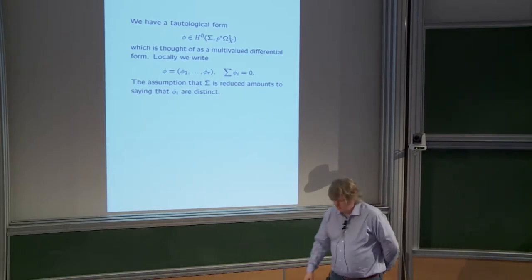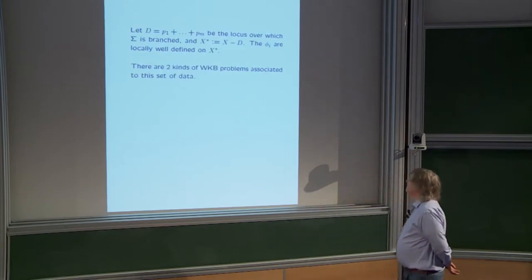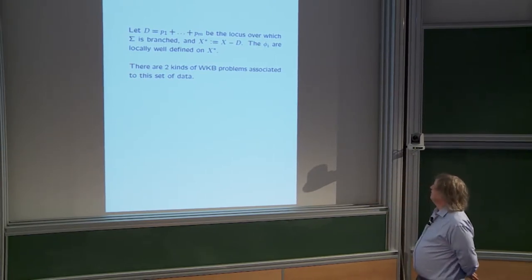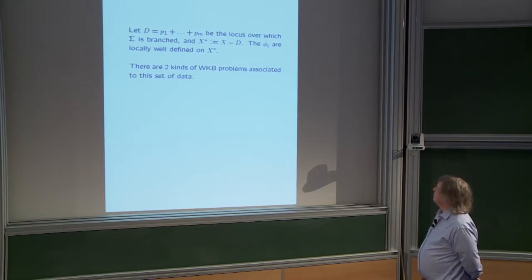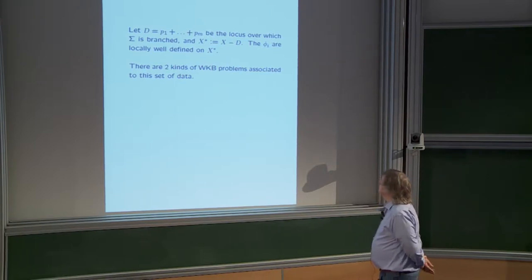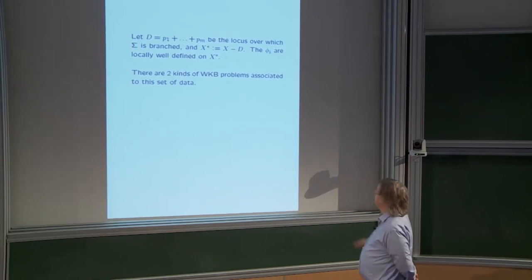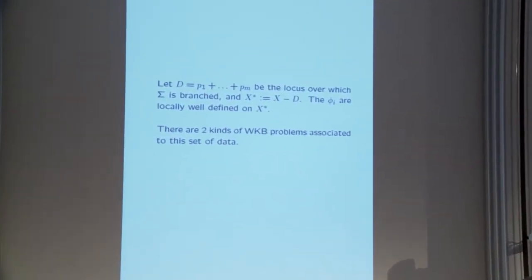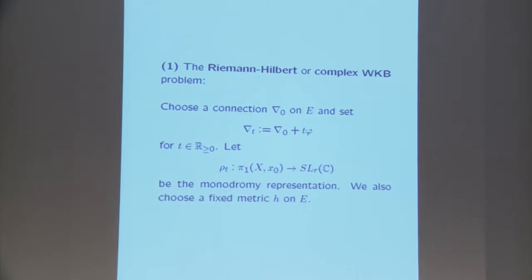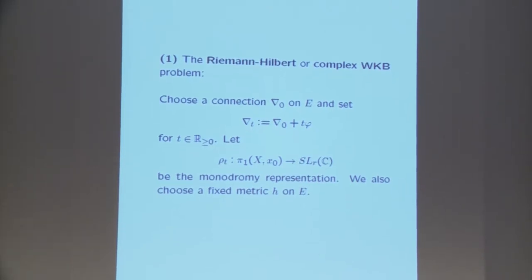The condition that the spectral curve is reduced is the same as saying that the phi_i should be distinct for general points in X. Let's consider the divisor which is the locus over which the spectral curve is branched, and let X* be the complement. The phi_i are locally well-defined on X*, and the spectral curve is an étale covering of X*. Now we'd like to think of two WKB problems associated with this data.